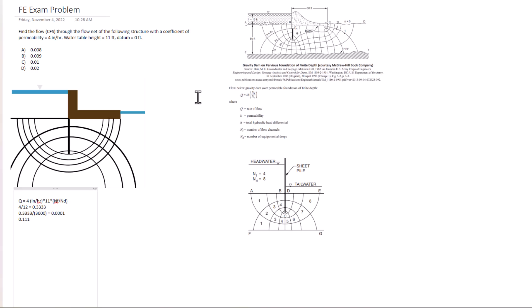So I have 0.0001 multiplied by 11 times... we still don't have this ratio yet and I'll show you how to determine that here. So nf over nd - we have this diagram here.